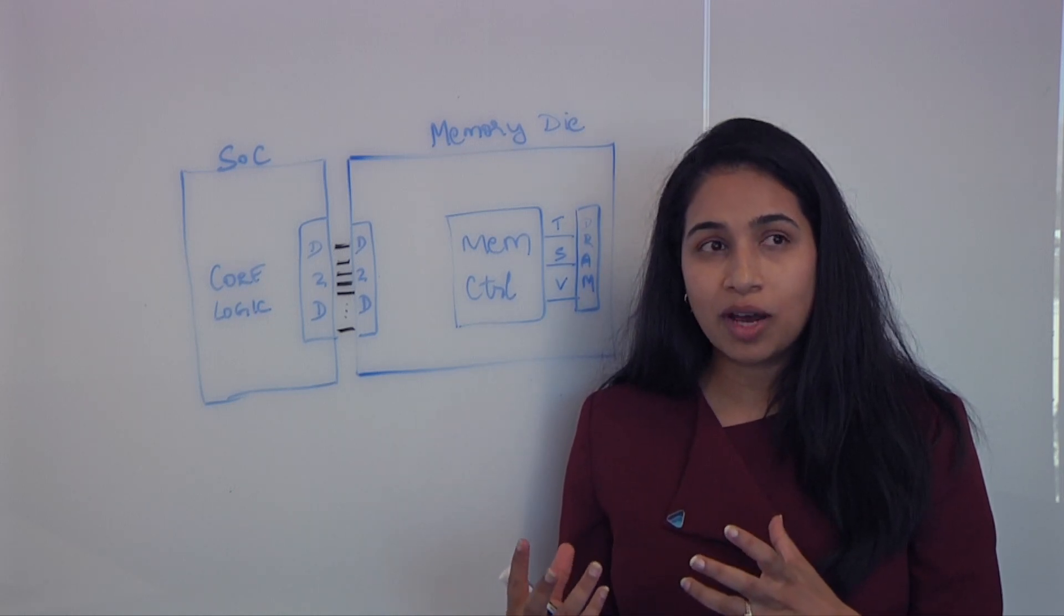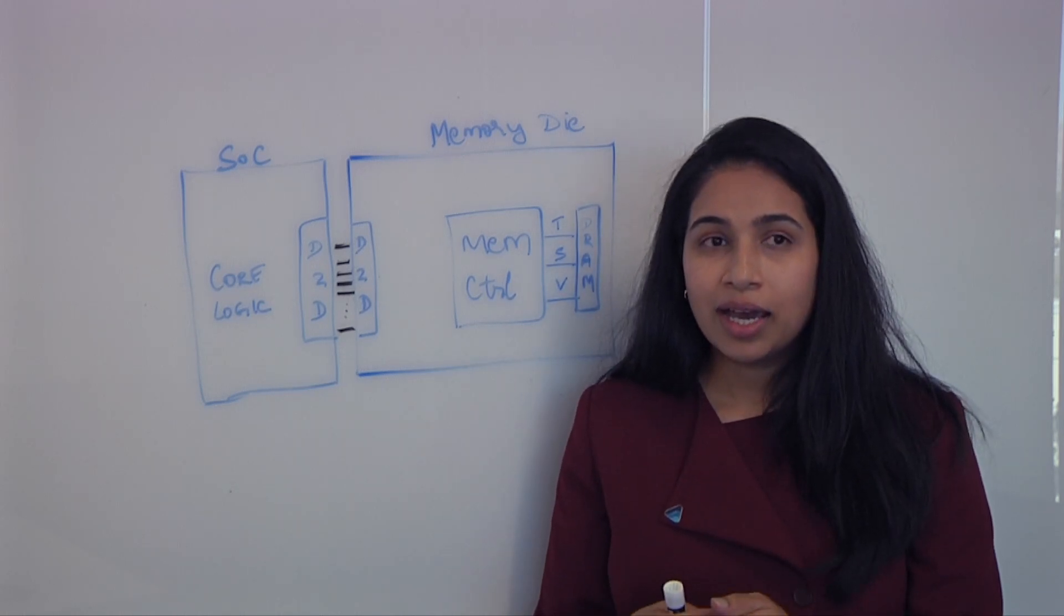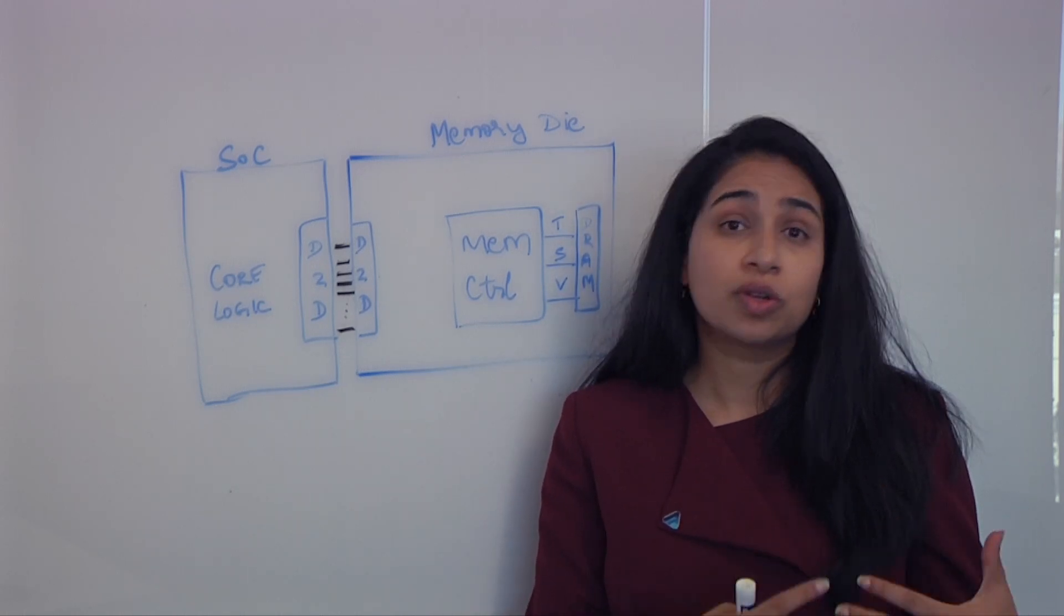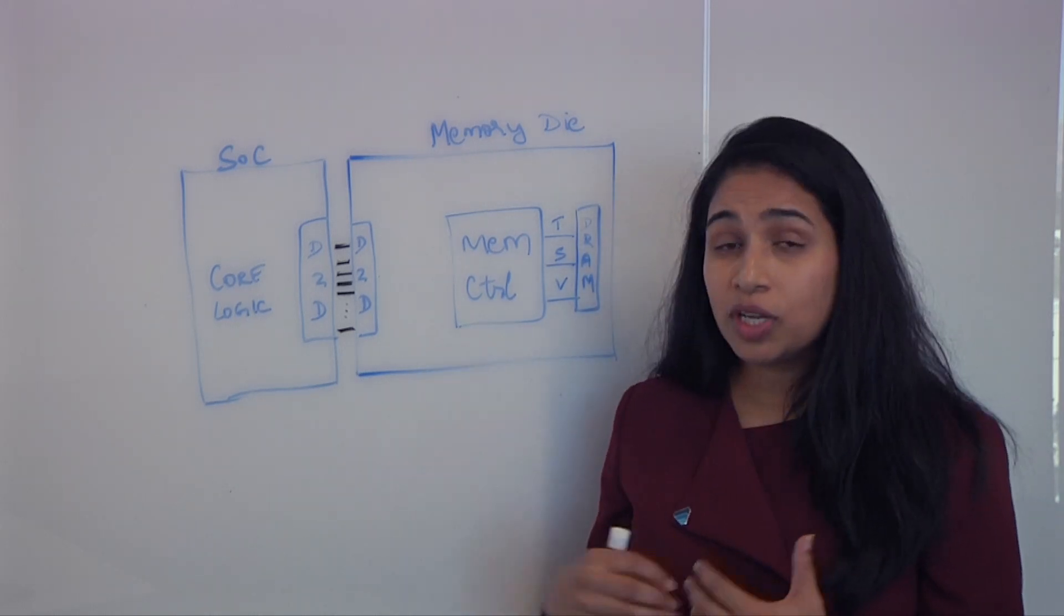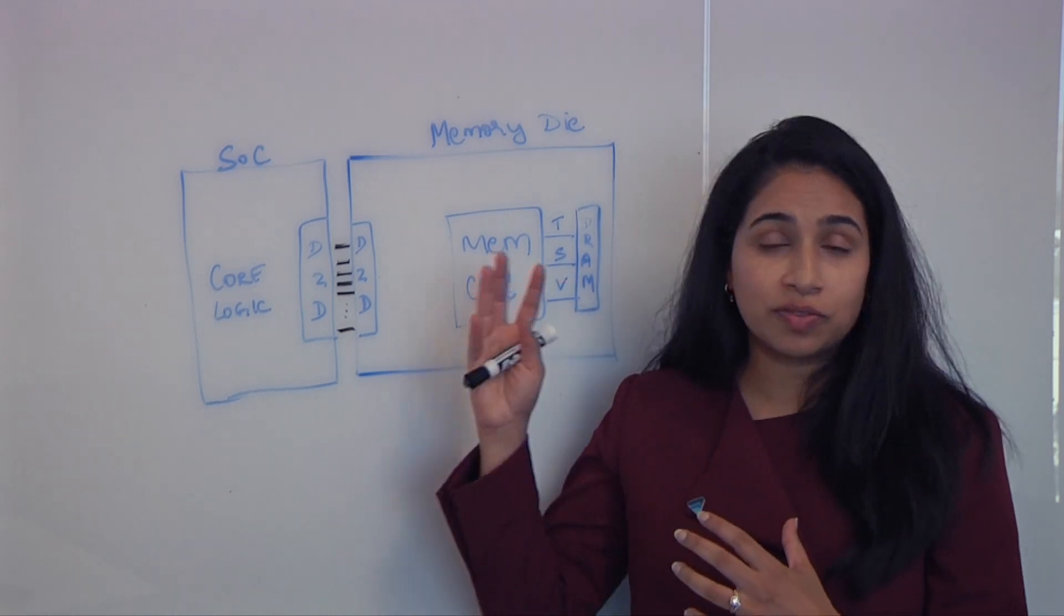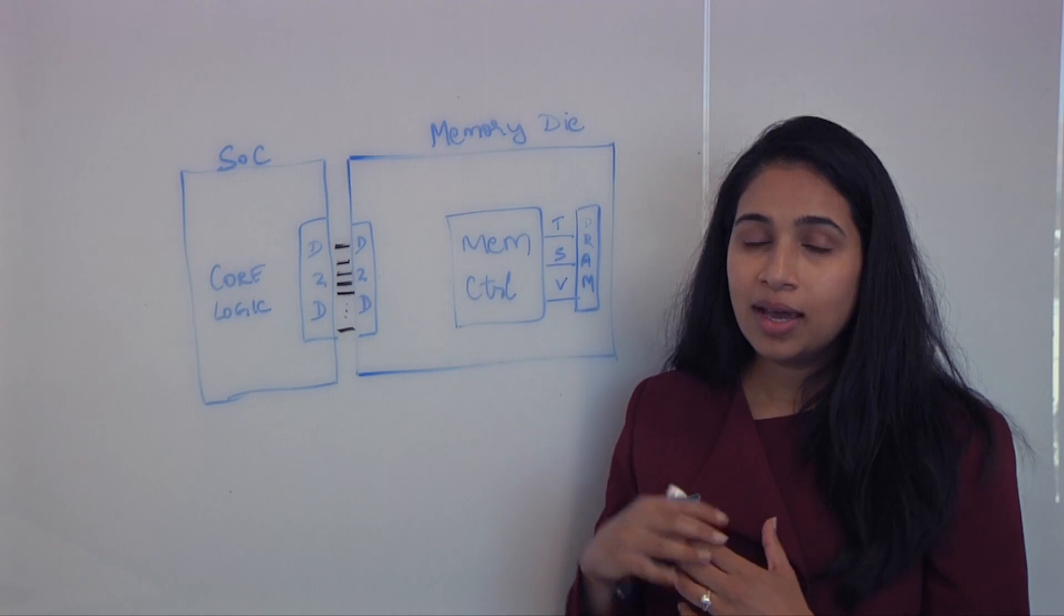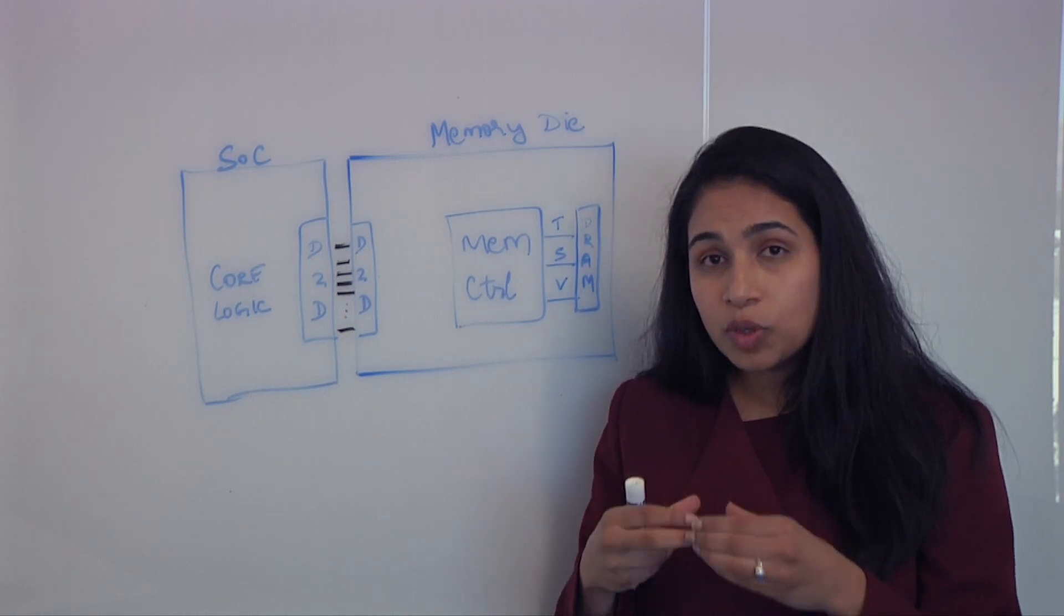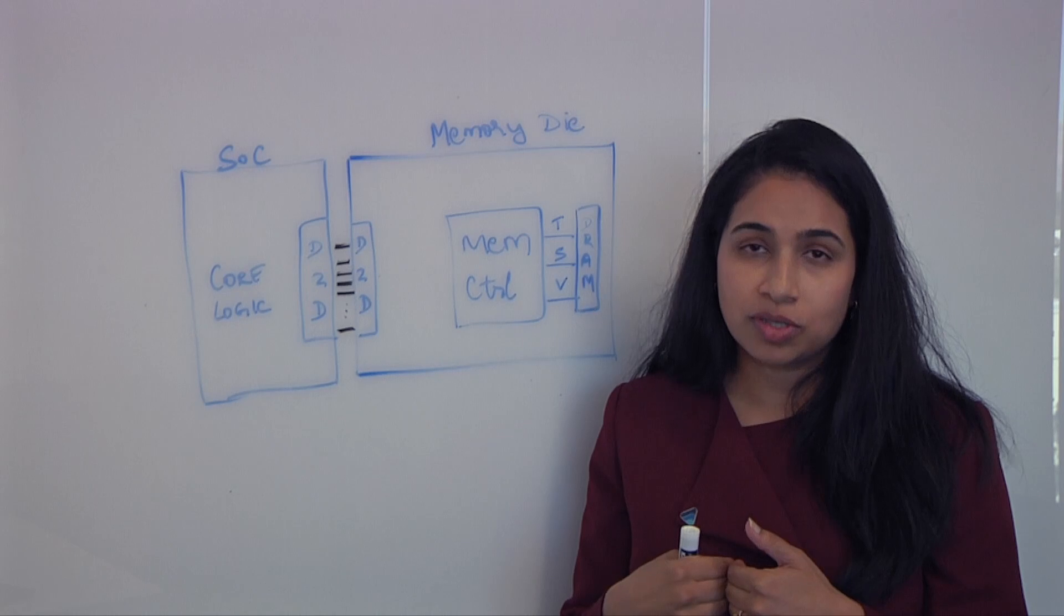Going forward, chiplets are getting more complex, where you can disaggregate a chiplet basically based on either function or you do it based on your process node. So where basically you have your compute on your latest and greatest technology node, and you keep some of your IOs and memory on your older technology nodes. So your custom memory base die could potentially be on an older process node, which could also potentially drive down the cost of overall total cost of ownership of the full SOC. And you could really keep your compute and your core logic on the latest three nanometer, two nanometer process nodes.